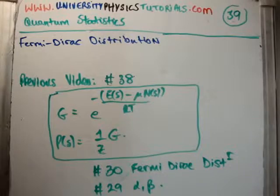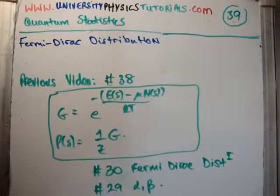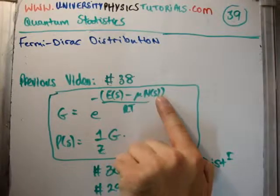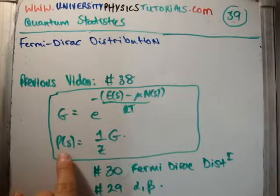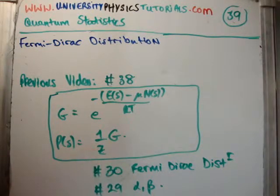In the previous video, number 38, I proved the Gibbs factor, which takes into account the movement of particles - it's different from the Boltzmann factor. The probability of a state occurring is 1 over z times g, where z is the grand partition function or the sum of the Gibbs factors.